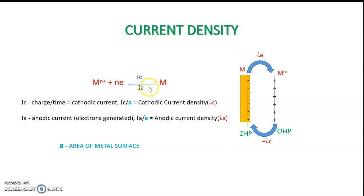Note that this is not for a complete cell; we are only considering a half cell for which oxidation and reduction are occurring when metal and solution are in contact. When we divide the currents by the area of the metal surface, we will get current density — so we have an anodic current density and a cathodic current density.